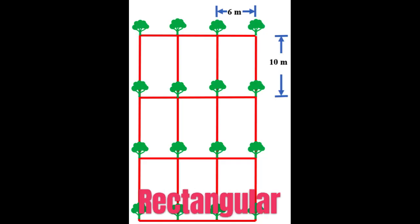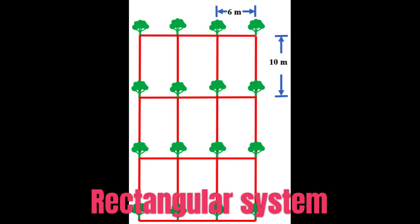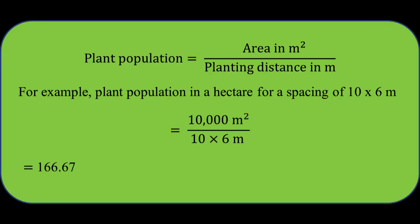In the rectangular system, the area is divided into rectangular grids and crops are planted at all the corners of the rectangles. The plant population in this system is calculated by dividing the area by the planting distance.